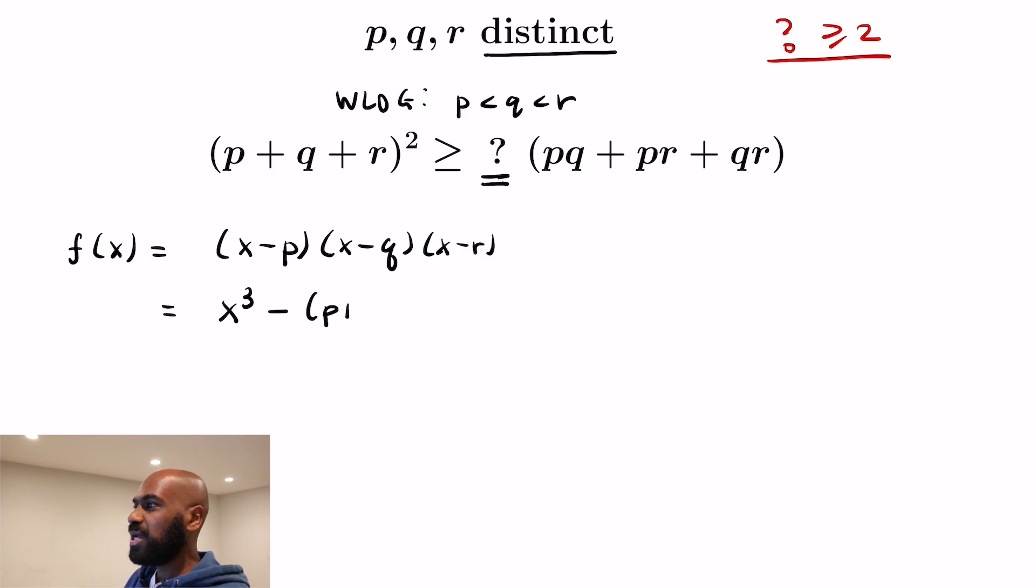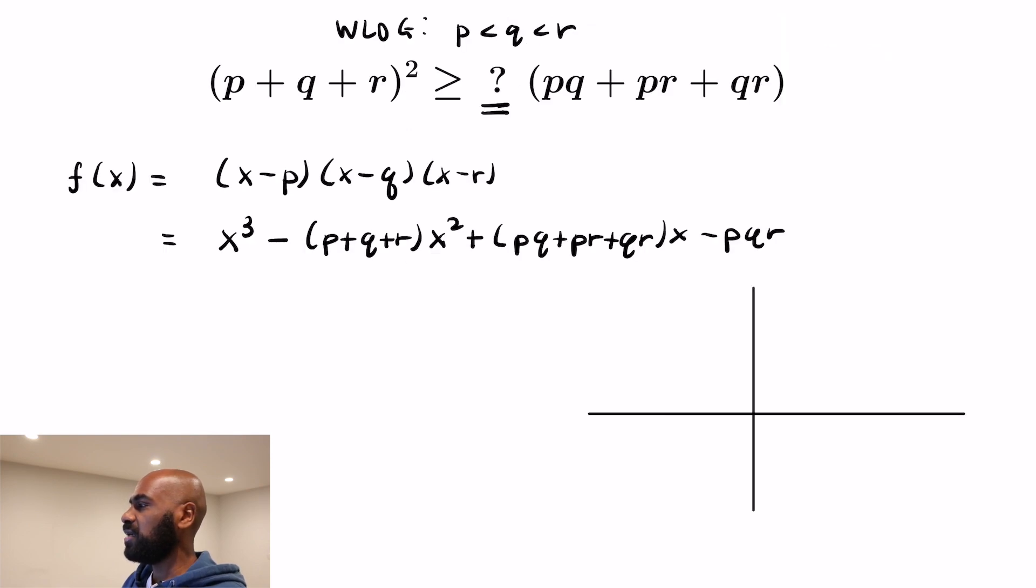and then you get like negative P times the x in the other two binomials to give you something like -(P+Q+R)x². And then you get a (PQ+PR+QR)x term, and a constant term of -PQR. So the inequality we're considering deals with the coefficients of this function. But we know what this function kind of looks like.